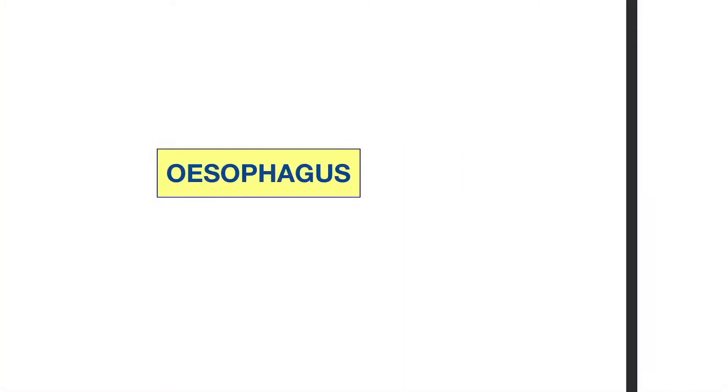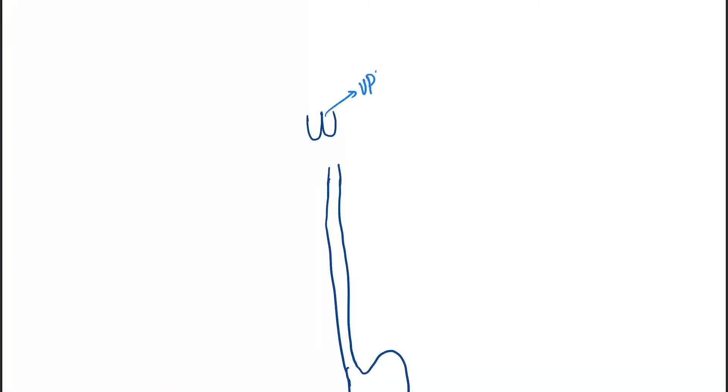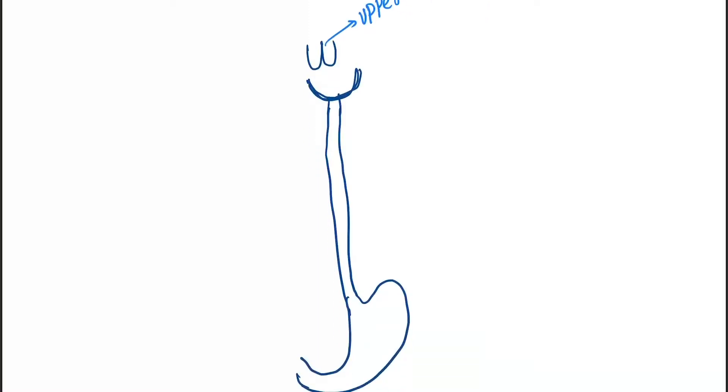Hello friends, today our topic is the anatomy of the esophagus. Let's draw the esophagus first — this is the esophagus, and this is the stomach. This is the upper incisor, and this is the pharyngoesophageal junction.